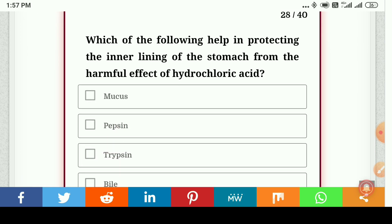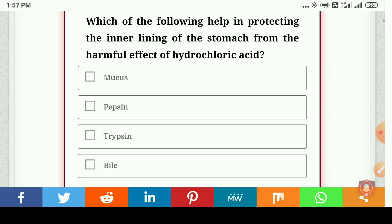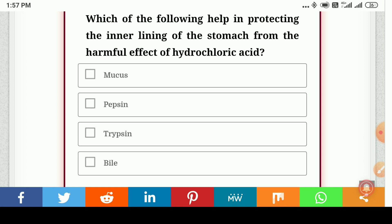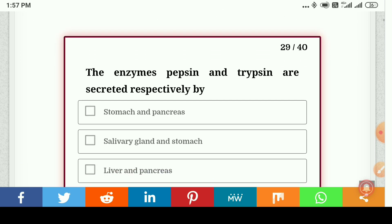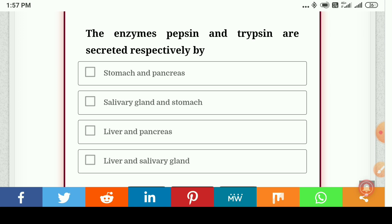Which of the following help in protecting the inner lining of the stomach from the harmful effect of hydrochloric acid: mucus, pepsin, trypsin, or bile? Answer is mucus. The enzymes pepsin and trypsin are secreted respectively by stomach and pancreas, the correct answer.